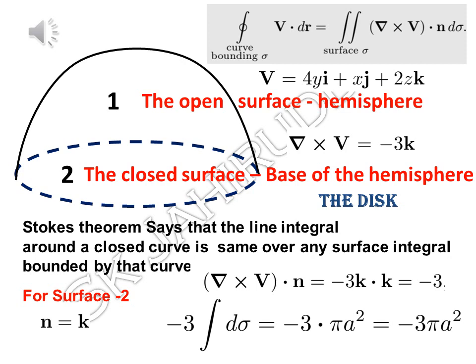Look at the image. You have a hemisphere, which is an open surface bounded by the dashed blue circle. Surface 1 is the open hemisphere. Then look at the disk on the xy-plane — the disk bounded by that same dashed blue circle. The hemisphere is above the xy-plane and the disk is on the xy-plane. Surface 2 is that closed disk, which is the base of the hemisphere.